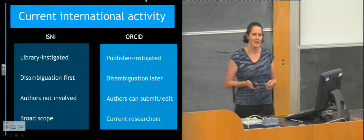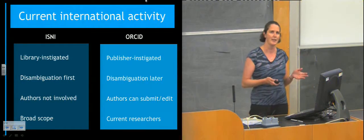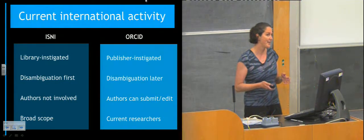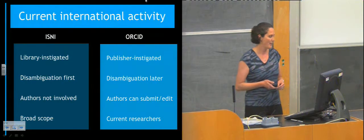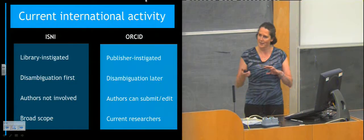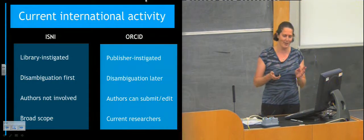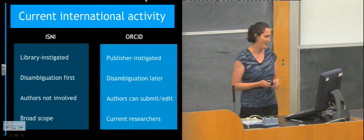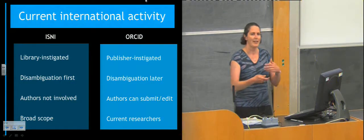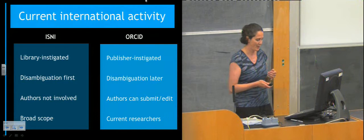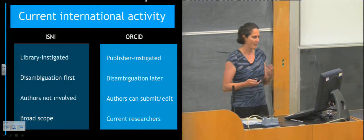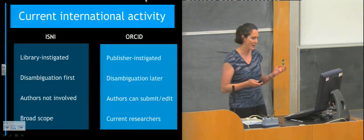The current international activity — we've heard a lot about ORCID just now — but there's also the ISNI approach, which is more of a library-based, library-instigated approach to identifying authors and other entities. The ISNI approach is very broad; authors still generally aren't involved in the process and disambiguation happens up front, whereas with ORCID the disambiguation is going to happen a bit later on. Researchers and contributors are very much involved in that process with the ORCID approach. There's also a difference in scope, with ISNI identifying things like fictional characters, ships, and all sorts of different entities that ORCID isn't interested in at the moment.